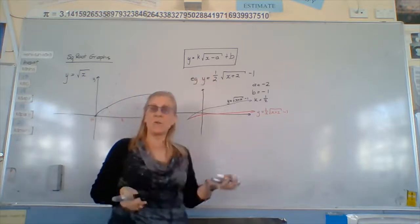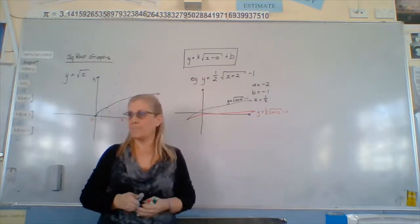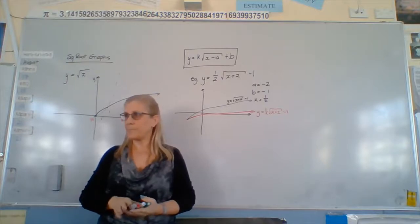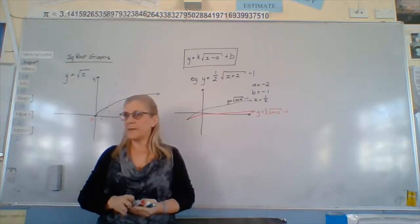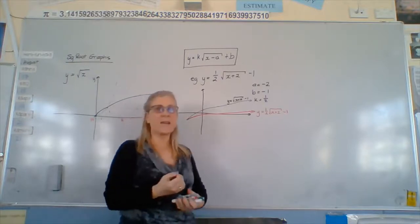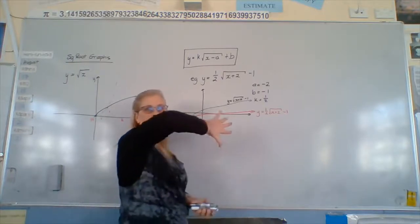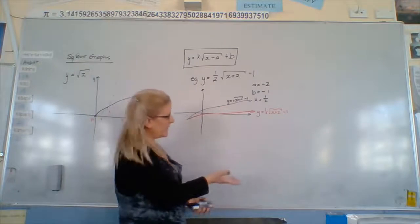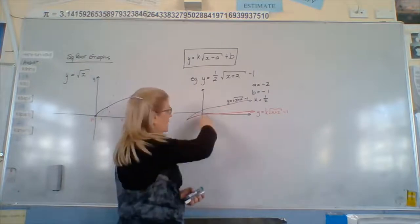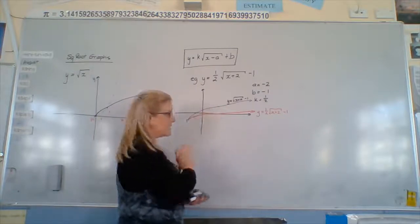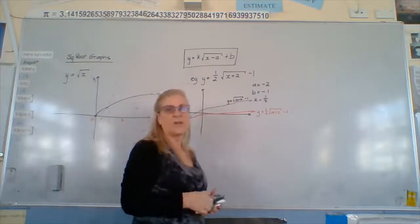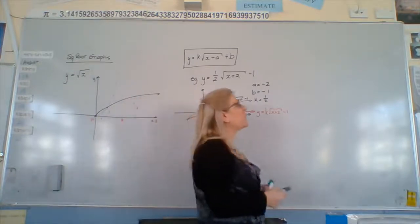If K was negative, what would happen? If there was a negative K, it would be flipped — it would belong under here. We'll do one of those to find the equation.